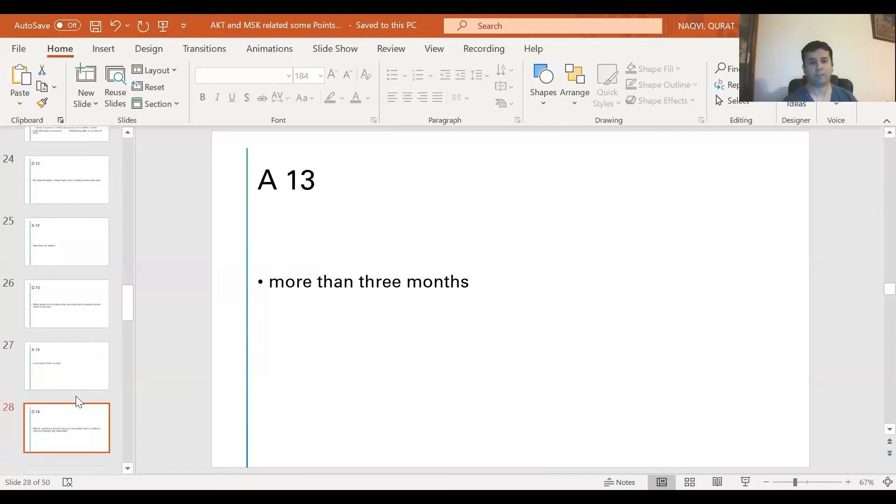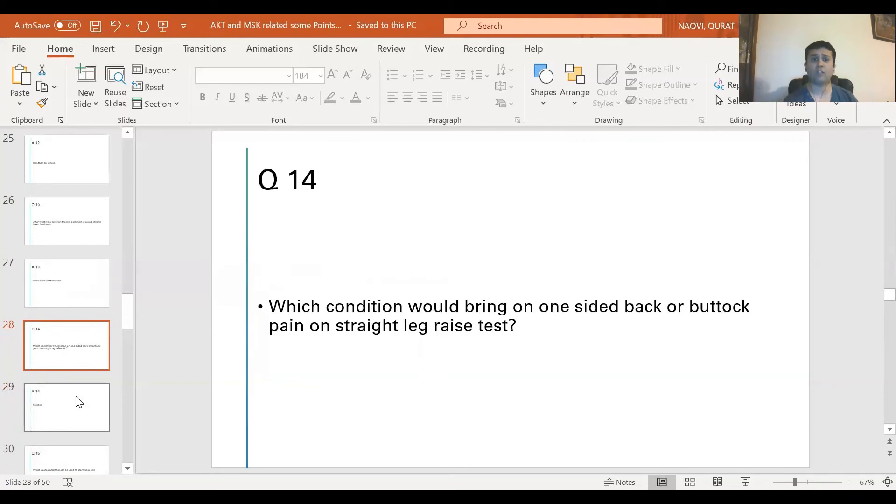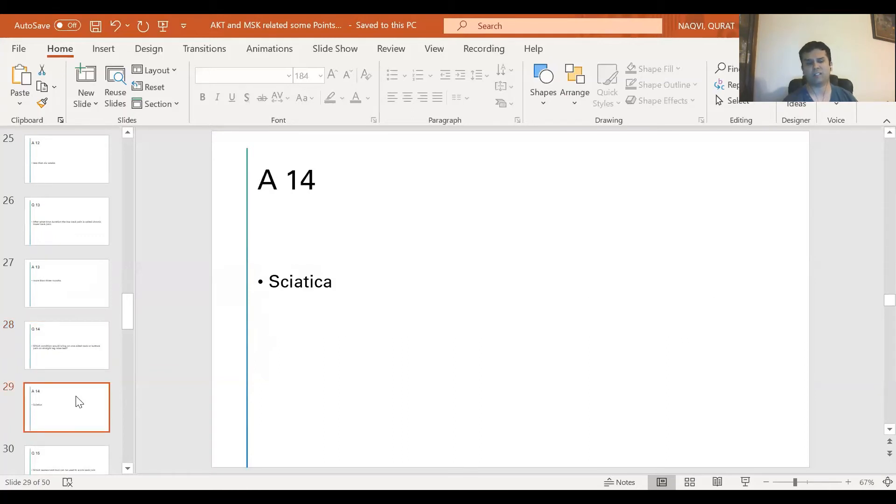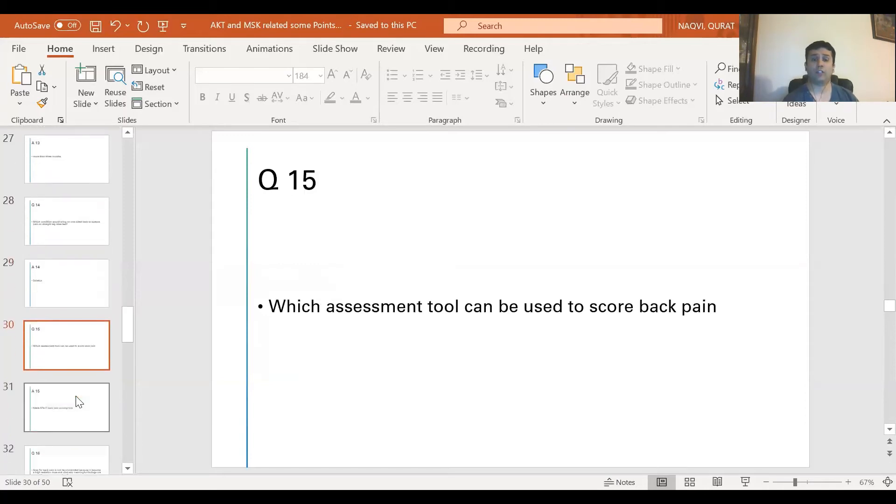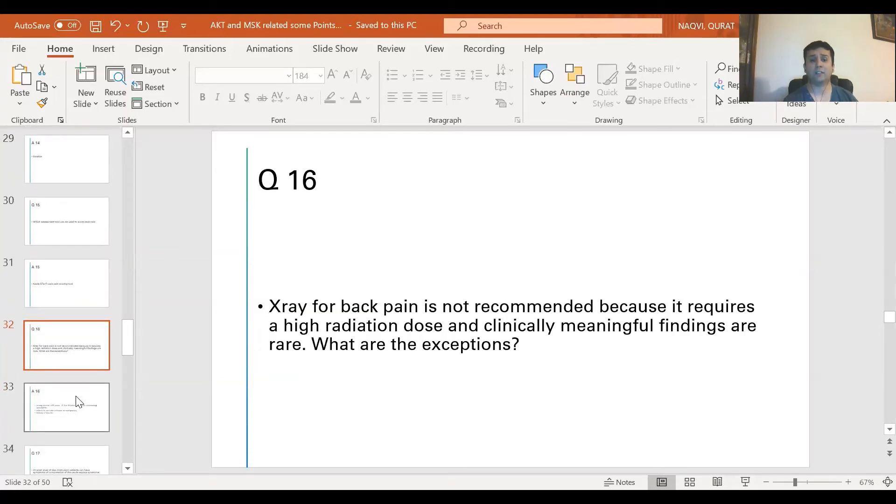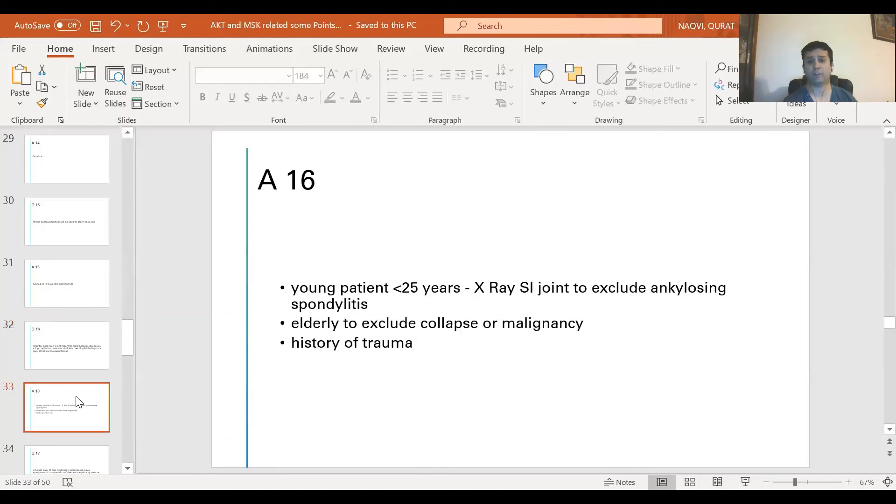Question 14: Which condition would bring on one-sided back or buttock pain on straight leg raise test? The answer is sciatica. Question 15: Which assessment tool can be used to score back pain or lower back pain? The answer is Keele STarT Back pain scoring tool. Question 16: X-rays for back pain is not recommended because it requires a high radiation dose and clinically meaningful findings are rare. What are the exceptions? The answer is young patient less than 25 years of age for X-ray of SI joints to exclude ankylosing spondylitis, and elderly to exclude collapse or malignancy, in history of trauma.